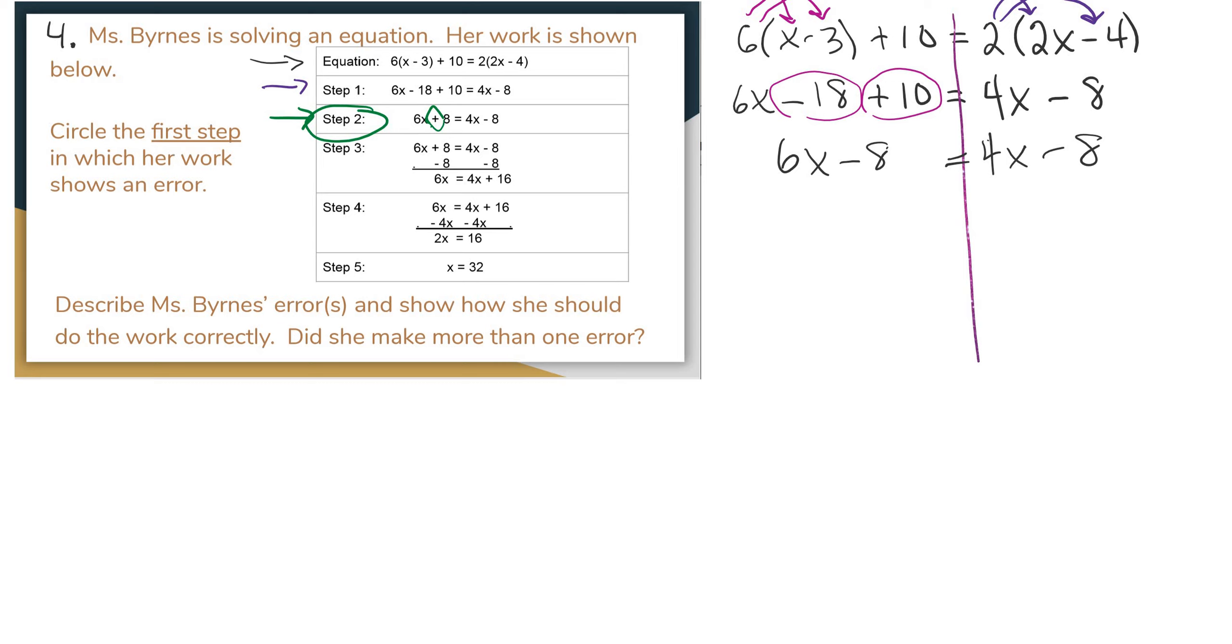On their end, 6x plus 8 equals 4x minus 8. That's what they got in step 2. Subtract 8. They're left with 6x equals 4x plus 16. It looks like they made an error. If you have a negative 8, and you're adding it to negative 8, it doesn't make positive 16. So there's another error.